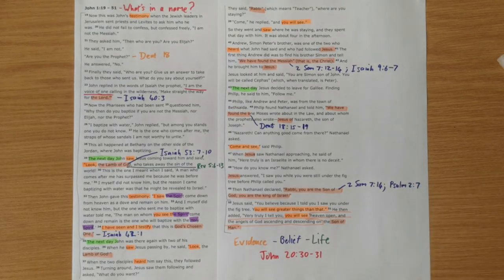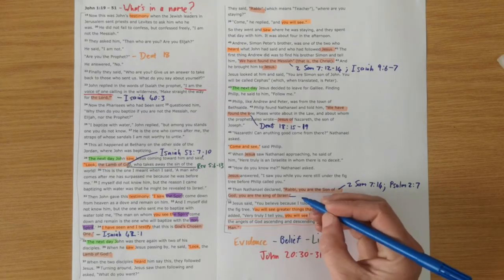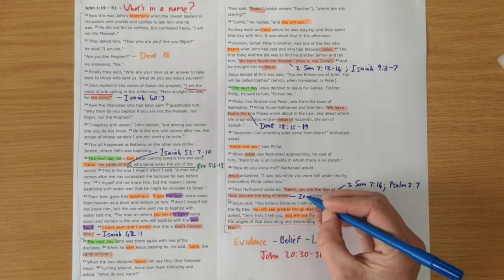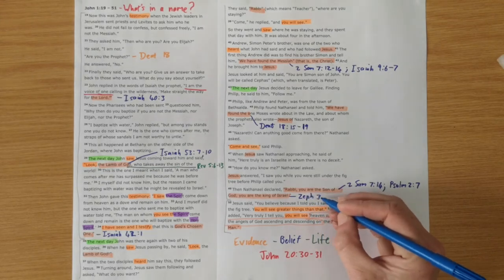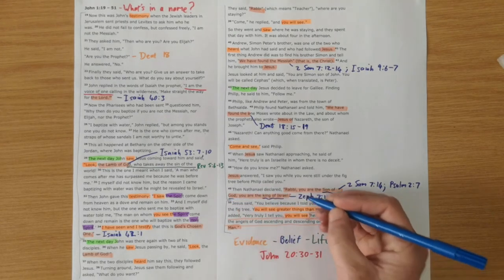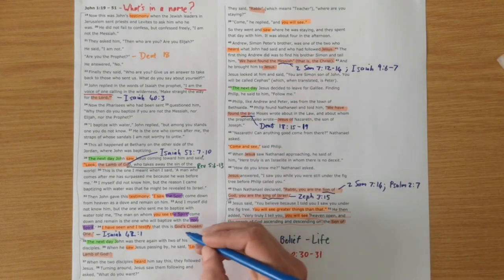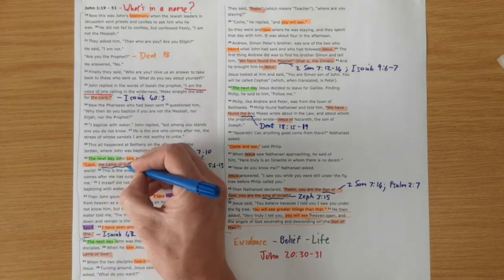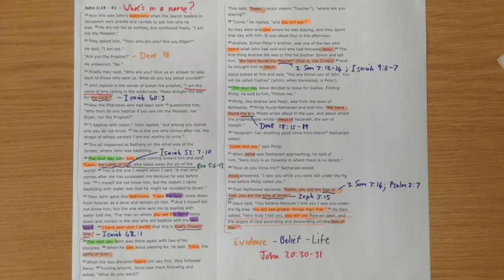And then in verse 49 we get Nathaniel saying 'you are the Son of God.' So again it's a 2 Samuel 7 reference, but even more explicitly it's a Psalm 2 verse 7. So Psalm 2 is all about the anointed king who was to come, who would rule eternally, and calling Jesus the Son of God is a reference to that—the one they've been waiting for has come. And then King of Israel is another Old Testament prophecy from Zephaniah 3 verse 15. They were longing for this King of Israel.